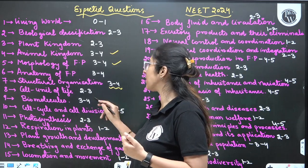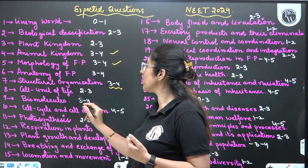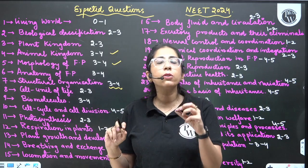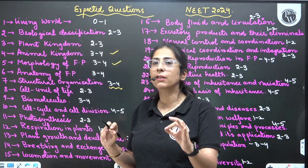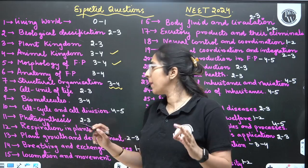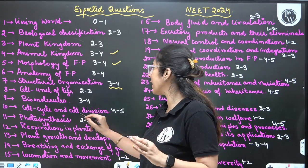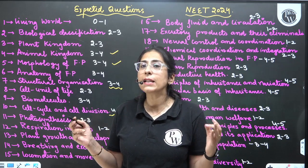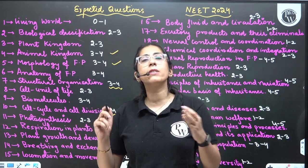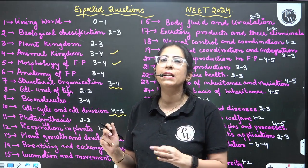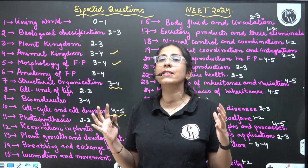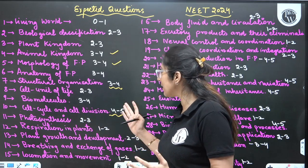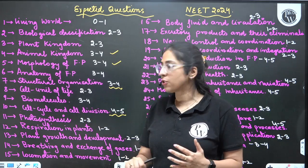Cell: Unit of Life — 2 to 3 questions. Biomolecules — 3 to 4 questions. The most important chapter I can see for NEET 2024 is Cell Cycle and Cell Division — 4 to 5 questions you can expect. Those who are in the mood to skip Cell Cycle and Cell Division, my recommendation is do not skip this chapter, because as per the analysis 4 to 5 questions can be asked from this topic.